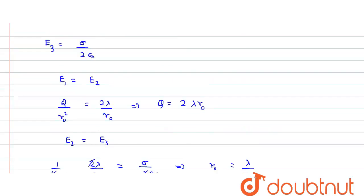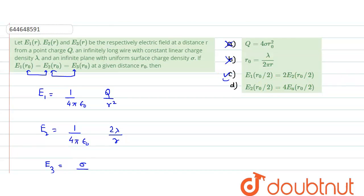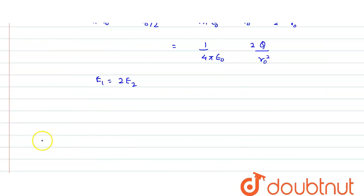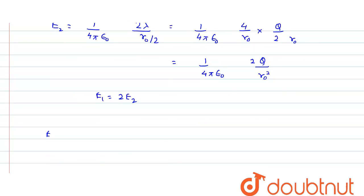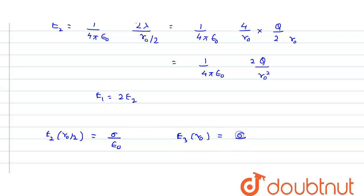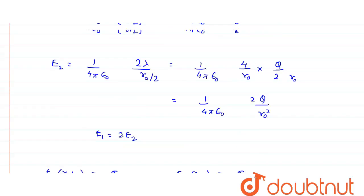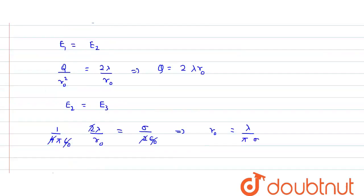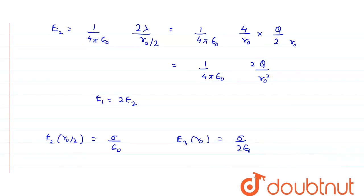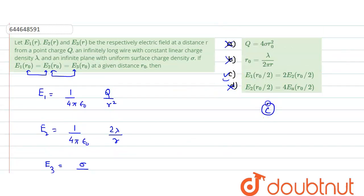So option C is correct: E1(r₀/2) equals 2 times E2(r₀/2). Checking option D: E2 at r₀/2 works out to sigma over epsilon, while E3 at r₀ equals sigma over 2 epsilon. The relation given in option D says 4, but the actual ratio is 2, so option D is also wrong. The correct option is C.